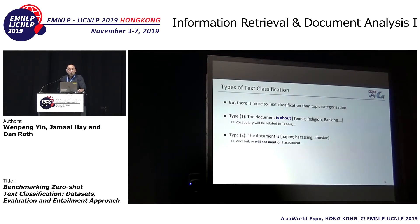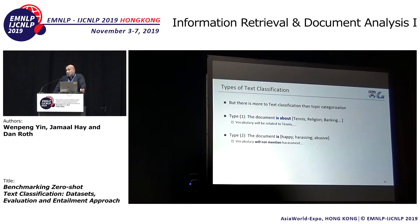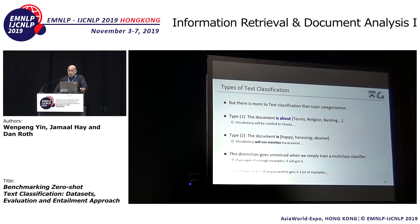We want to go beyond just classifying topics. The first step in this work is observing that text classification comes in multiple types. For example, in topic classification, we think the document is about something — tennis, religion, banking — and the vocabulary is going to be related to the label. On the other hand, other types of text classification involve a document being happy or harassing, and in this case the vocabulary will not mention the word harassment — it will just be a harassing document. This distinction goes unnoticed if all you do is a multi-class classifier. That means you need a lot of examples. Can we do better? Can we deal without a lot of examples?